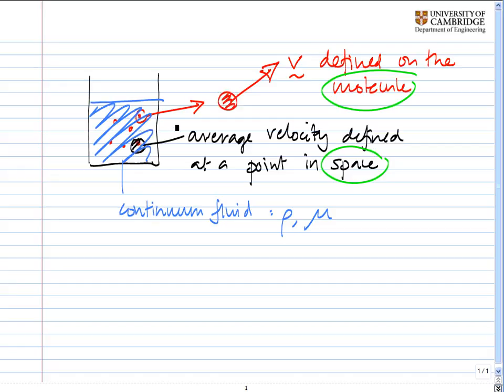Now, I want to think, first of all, about this thing here, the average velocity being defined at a point in space. And obviously, in order to average over the molecules, we have to have enough molecules for this average to be meaningful.